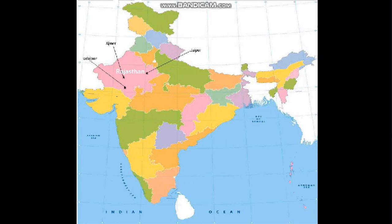Our next state is Odisha. It is situated on the eastern coast of India. Bhubaneswar is its capital and it is famous for its temples. Puri is famous for the Jagannath Temple. The next important city is Cuttack, which is the birthplace of Netaji Subhash Chandra Bose.